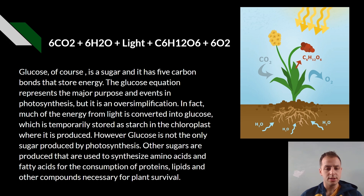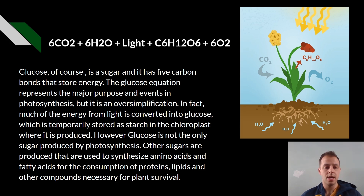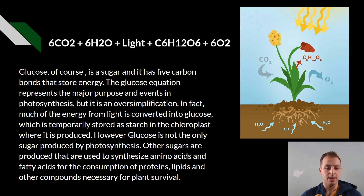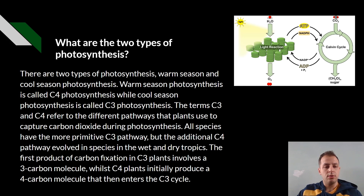However, glucose is not the only sugar that is produced during photosynthesis. Other sugars are produced that are also used to synthesize amino acids, fatty acids, or for the consumption of proteins and other compounds necessary for plant survival.